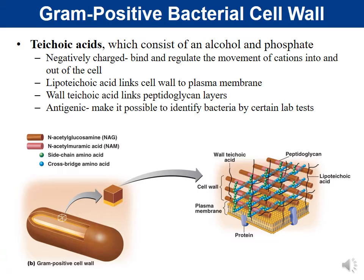Teichoic acids can also be antigenic. Just as flagella have an H antigen useful for identifying bacteria, teichoic acids have antigens that can be recognized by the immune system and help us identify the bacteria in certain lab tests.